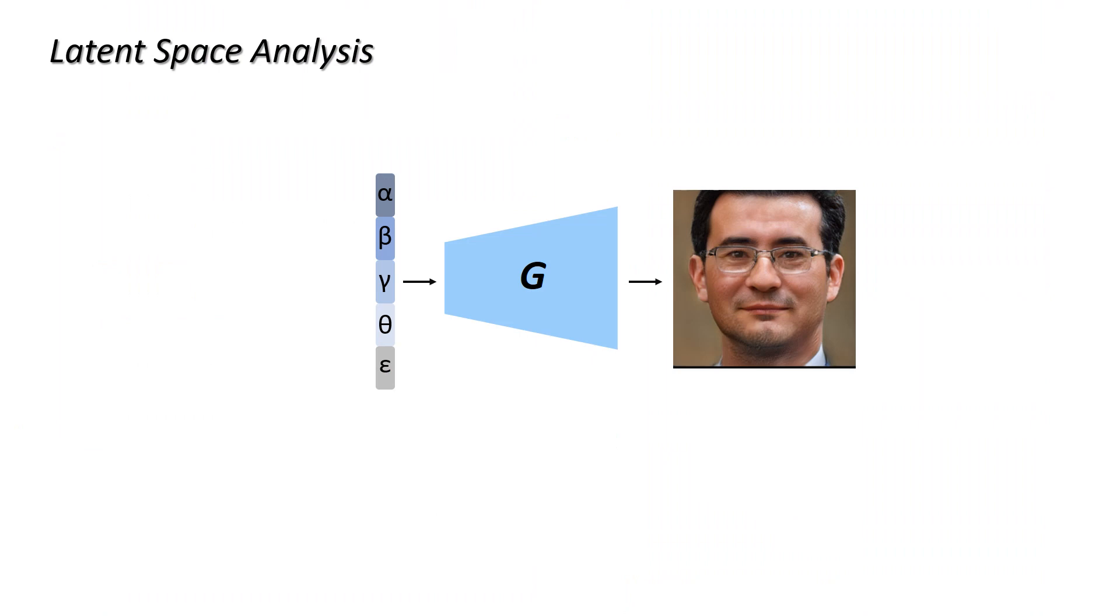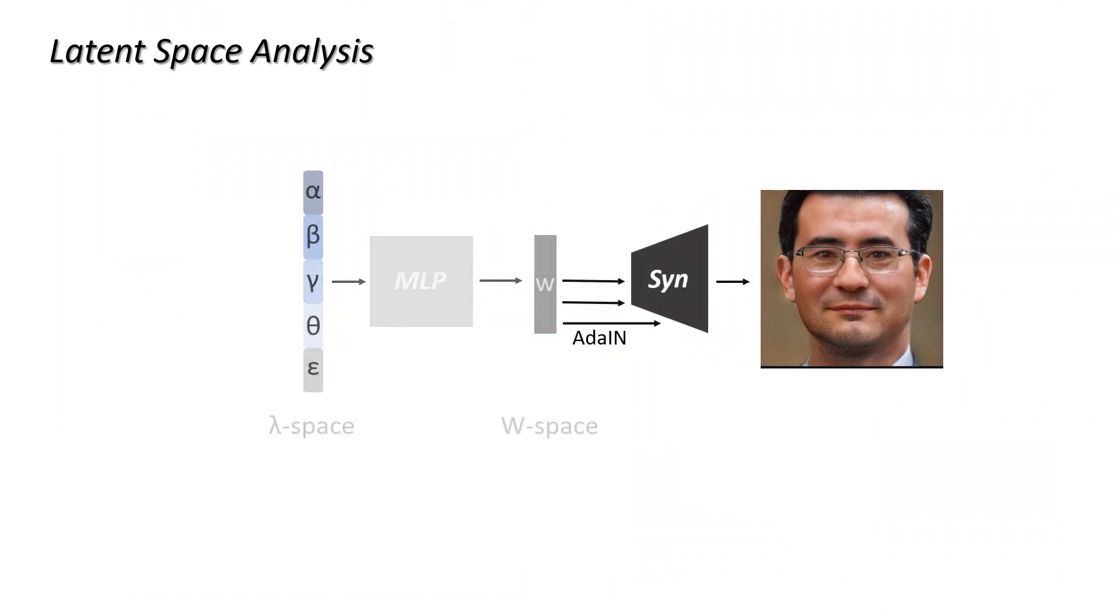A key ingredient in StyleGAN is the input space to W space mapping. We analyzed the W space in our trained model and found that it is also trained in a disentangled manner. More details can be found in the paper.